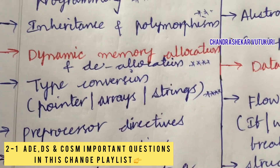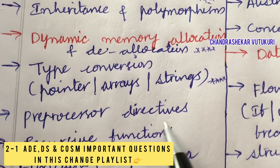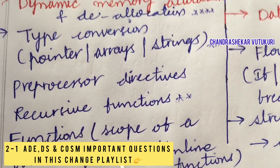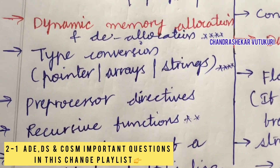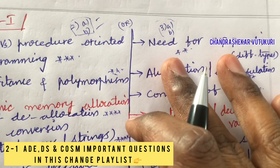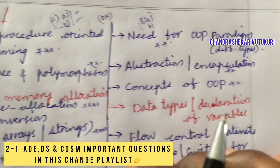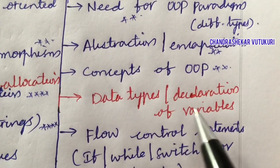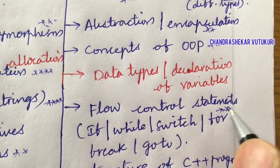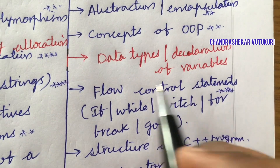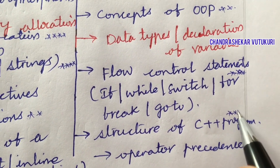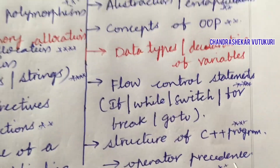Preprocessor directives and recursion functions may be a short question. Functions and the scope of a variable, default and inline functions may be the B question in the paper. Do not expect a direct 5-mark or 10-mark question — it is a combination of 5+5 split. Data types and declaration of variables, and flow control statements are among the topmost questions which may occur this time, along with the structure of a C++ program and operator precedence.